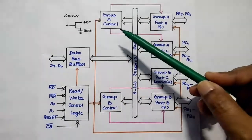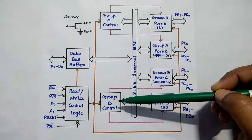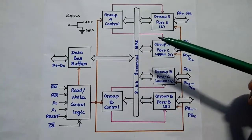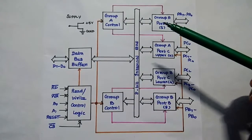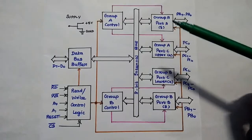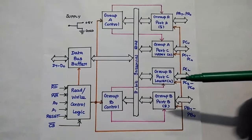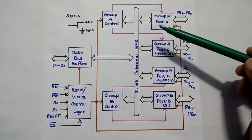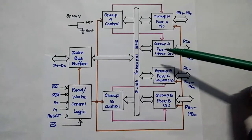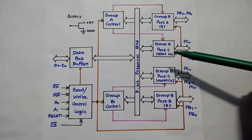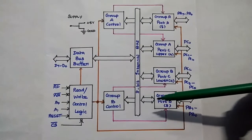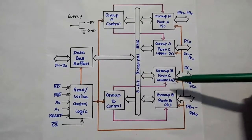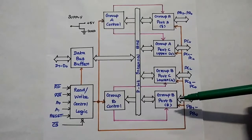Group A Control and Group B Control are two control units used to control the operation of Group A and Group B ports. Group A Control controls Port A and Port C upper bits, while Group B Control controls Port C lower bits and Port B.